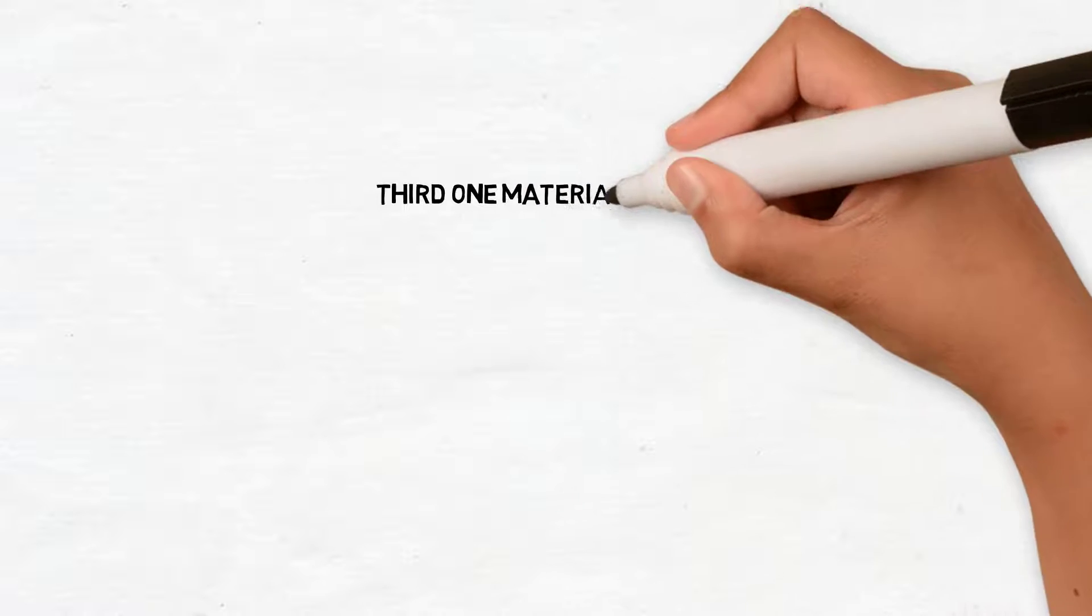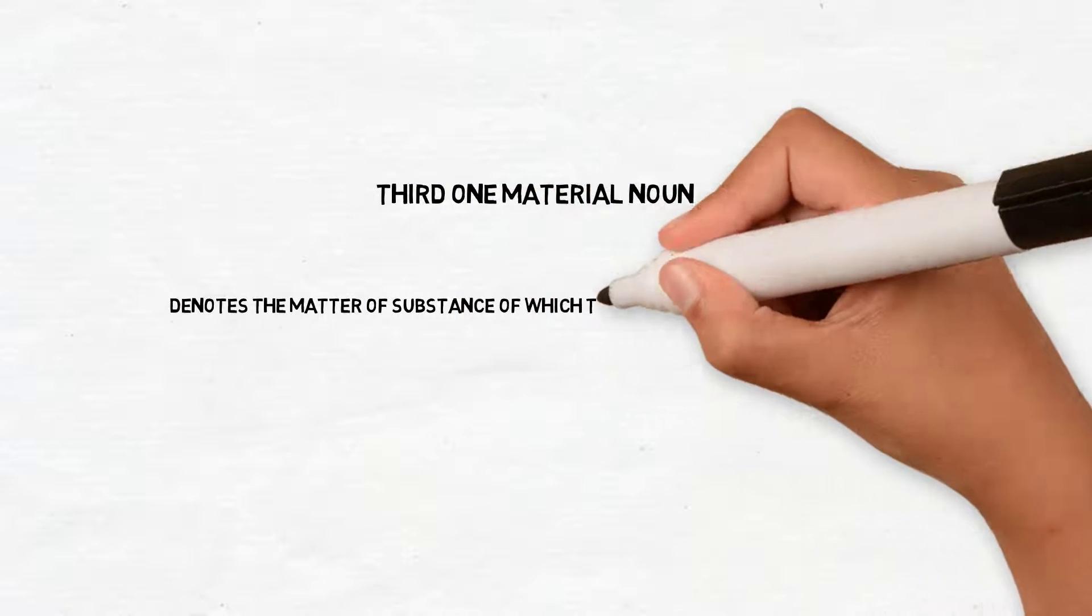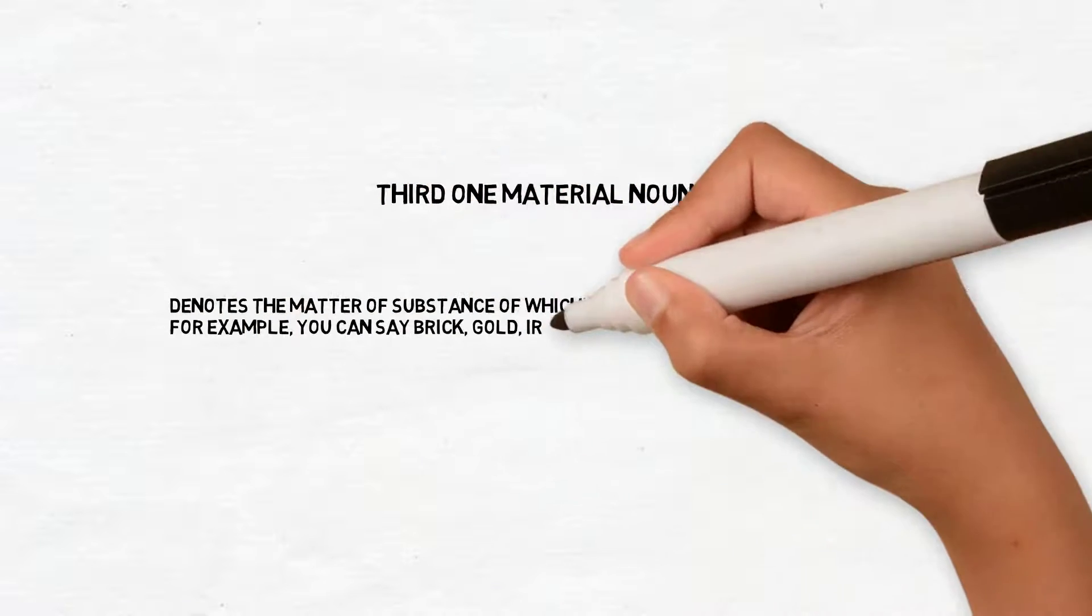Third one, material noun. It denotes the matter or substance of which things are made. It cannot be counted. For example, you can say brick, gold, iron, etc.